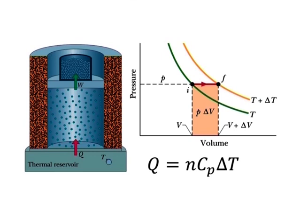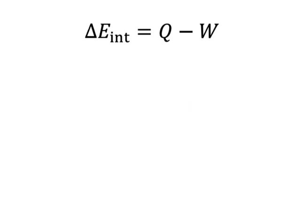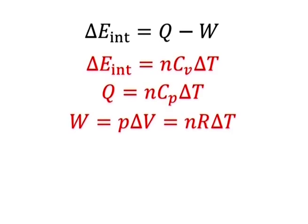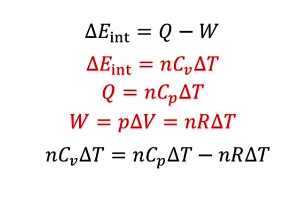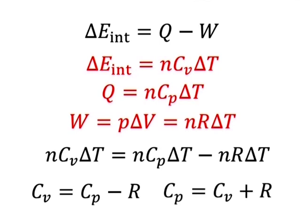To relate Cp and Cv, we start with the first law of thermodynamics: delta E_internal = Q minus W. Substituting equivalents and simplifying gives n·Cv·delta T = n·Cp·delta T minus nR·delta T. Dividing through by n·delta T we get Cv = Cp minus R, and therefore Cp = Cv + R. This prediction of kinetic theory agrees well with experiment not only for monoatomic gases but also for gases in general, as long as their density is low enough that we may treat them as ideal.